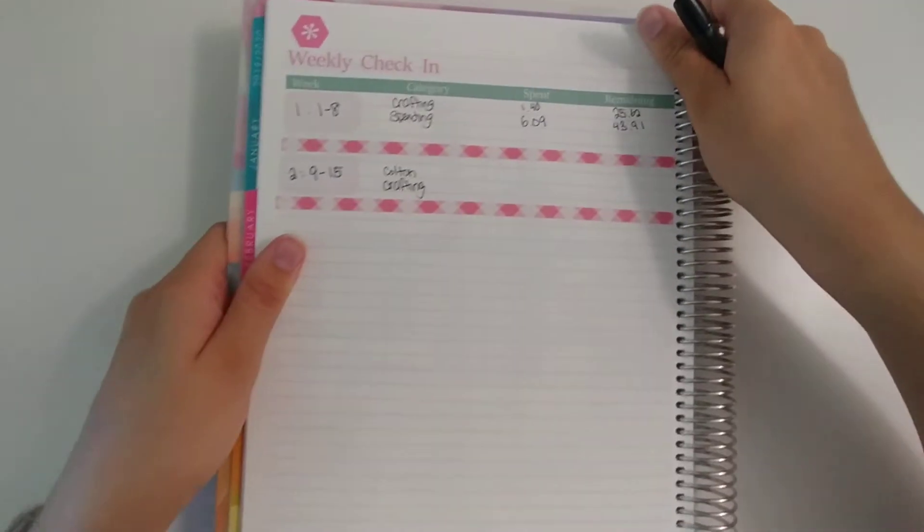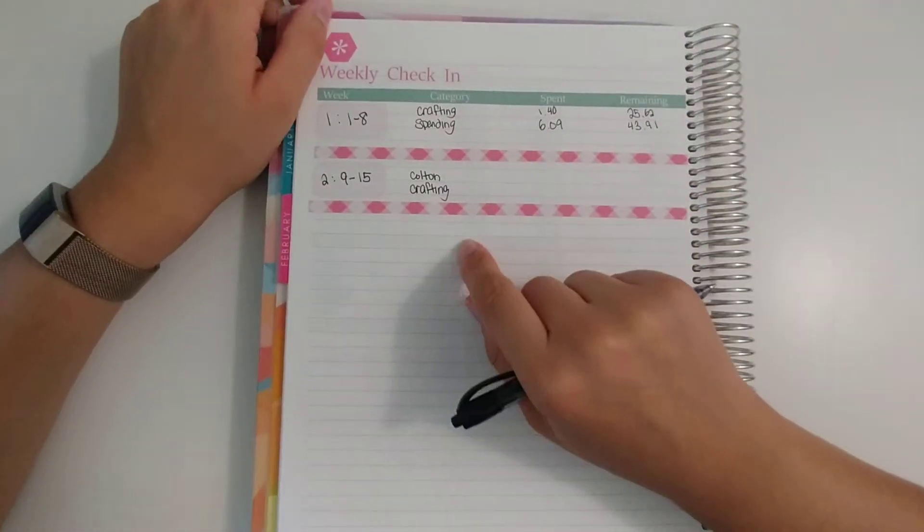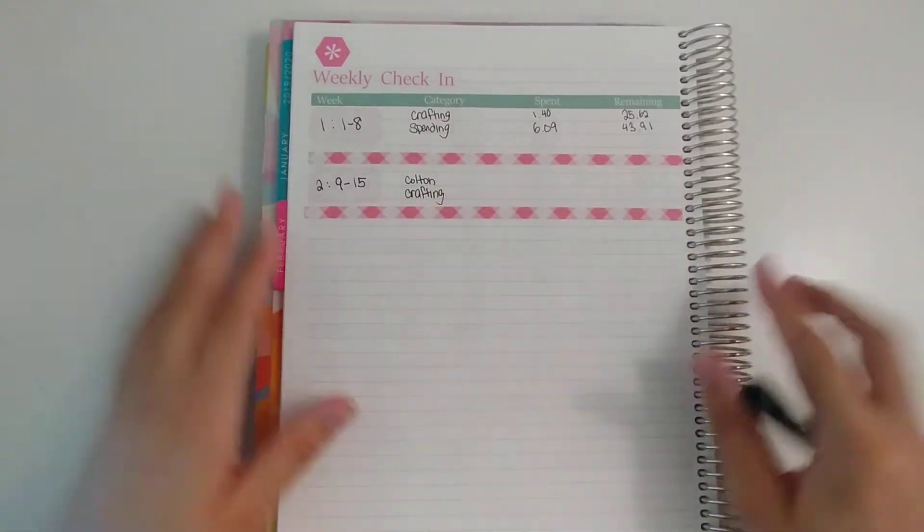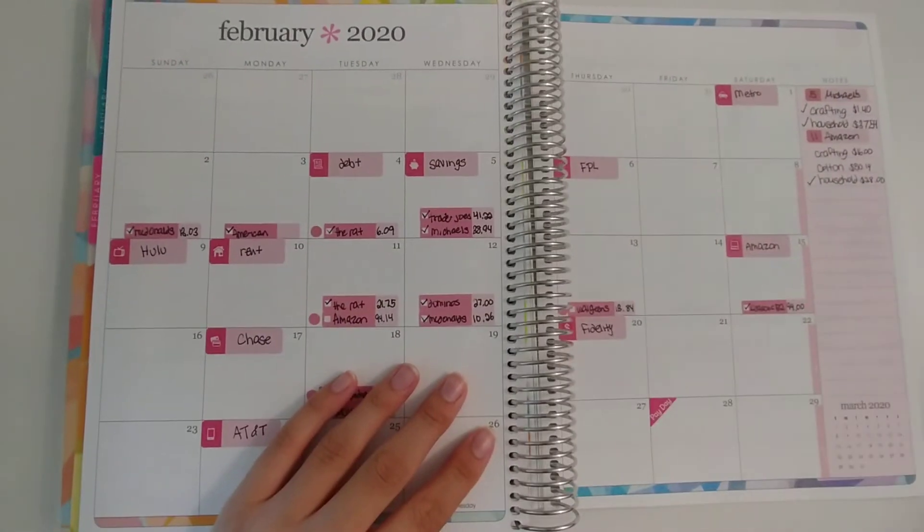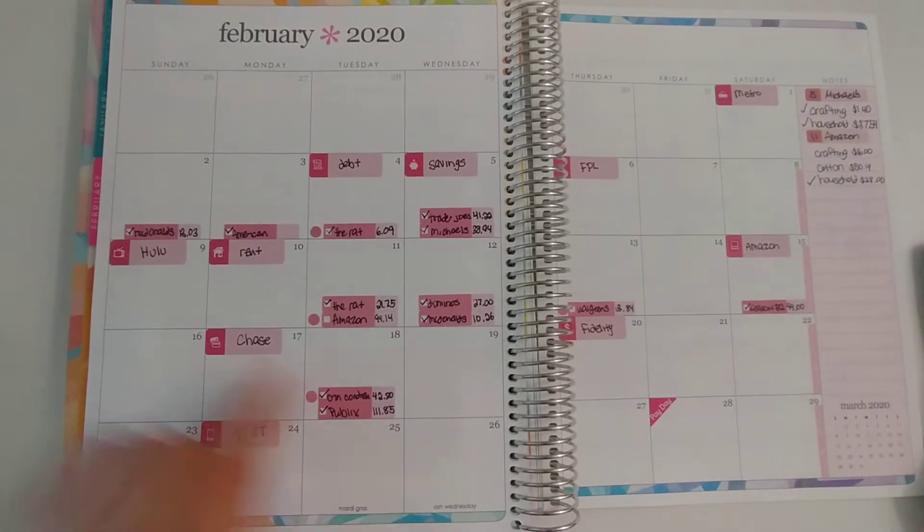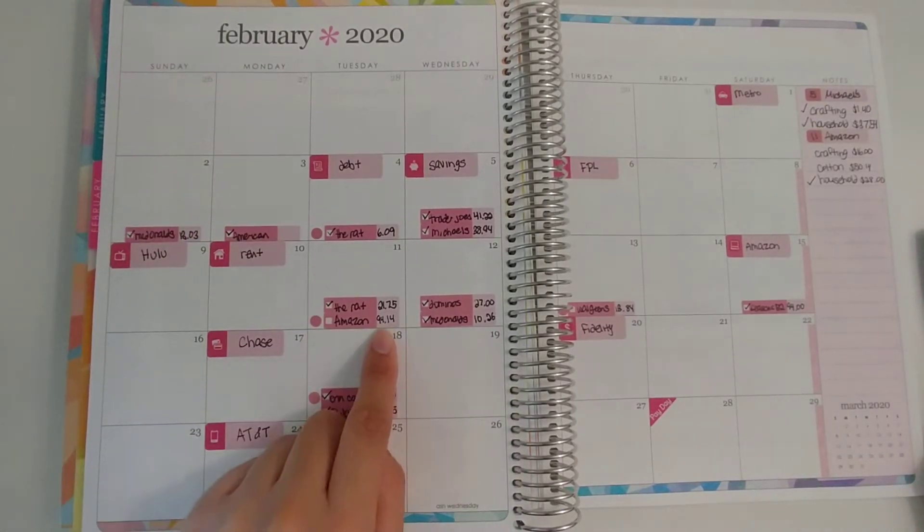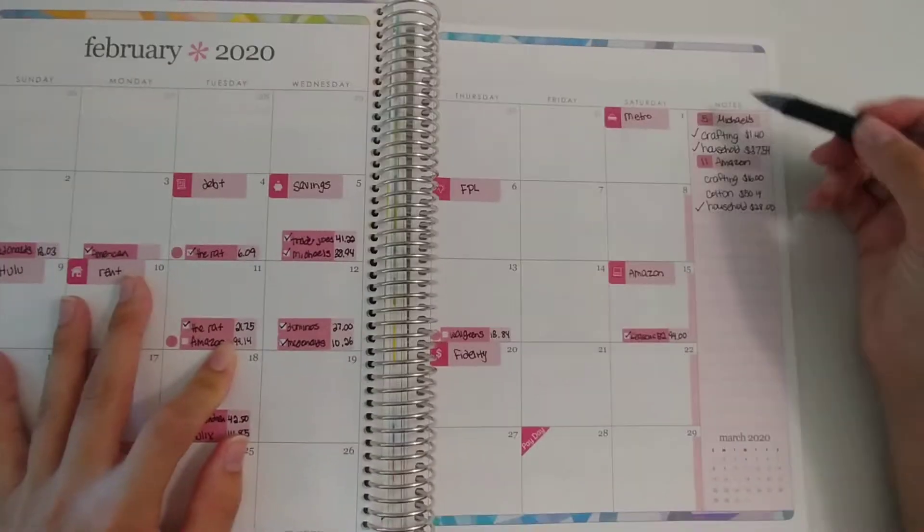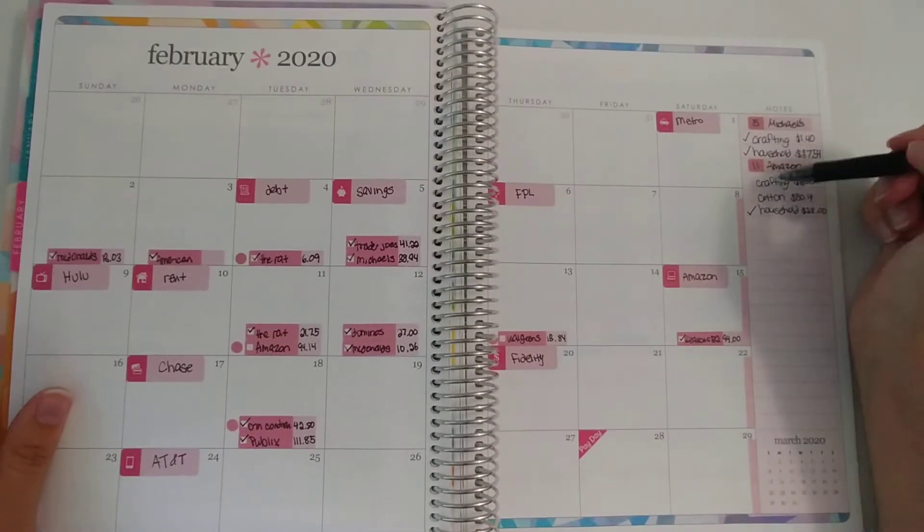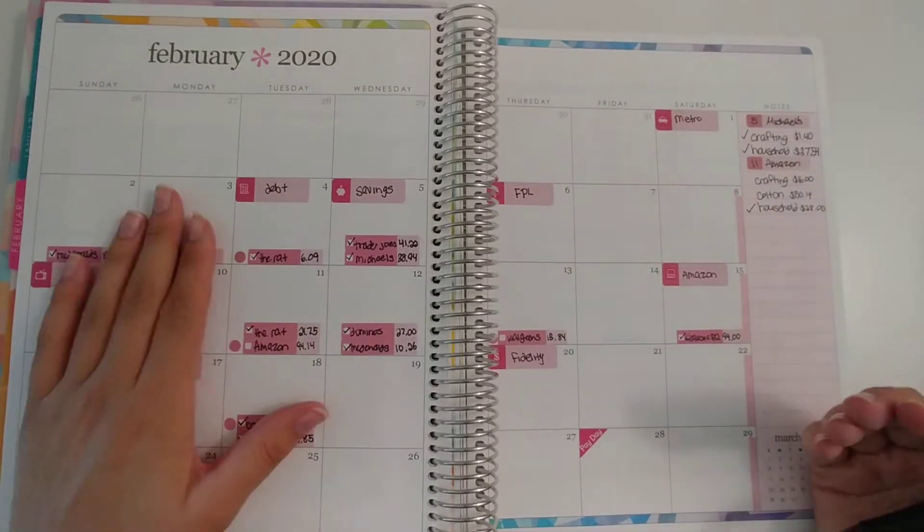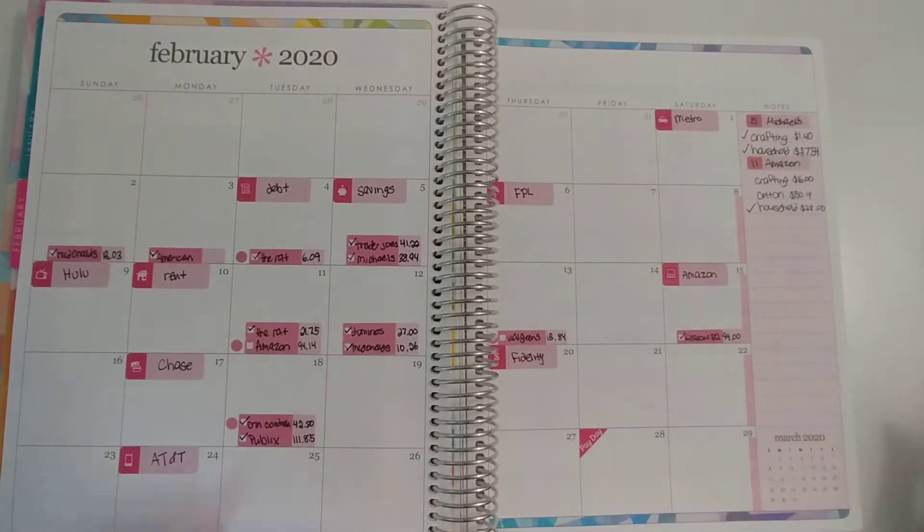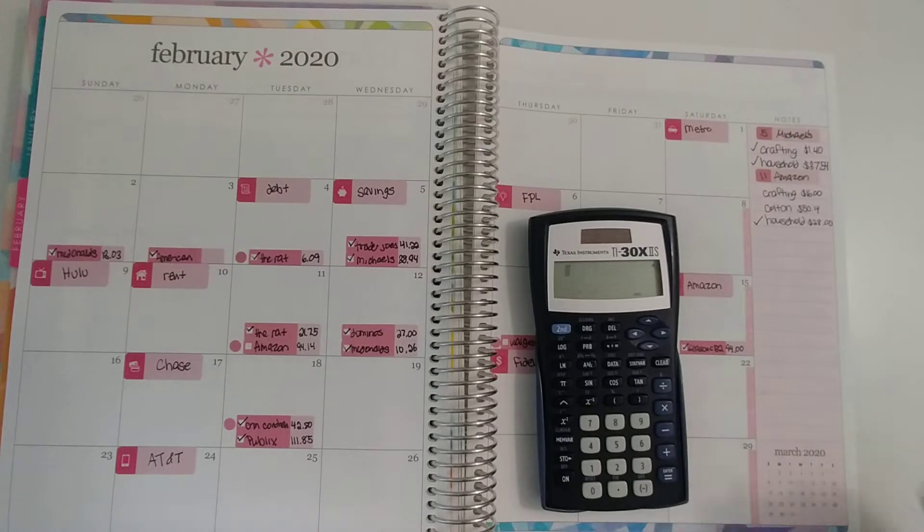And then finally we are at the weekly check-in page. This week I only had two categories: Colton and Crafting. So Colton is the first category. The first unchecked item I have is Amazon for $94.14. In my sidebar I have a breakdown. If I spend any money in a store or website that has multiple categories, I'll break it down over here so I'm not using as many of these stickers. I think it's a little bit more cost effective that way.